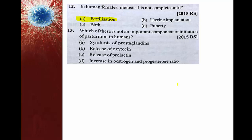Which of the following is not an important component of initiation of parturition in humans? Parturition is giving birth to the fully developed fetus at the end of the gestation period. Options include: oxytocin, increase in estrogen and progesterone, synthesis of prostaglandins, and release of prolactin. Prolactin is necessary for milk production from mammary glands, not for initiating parturition. Prostaglandins help in contraction of uterine muscles.